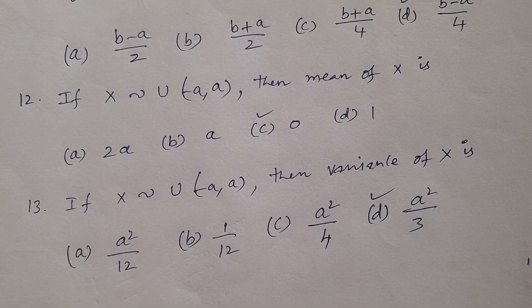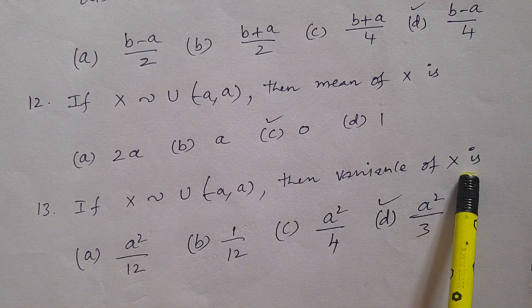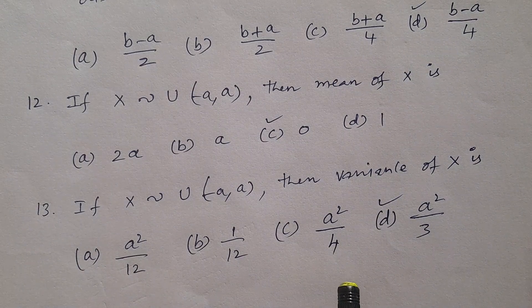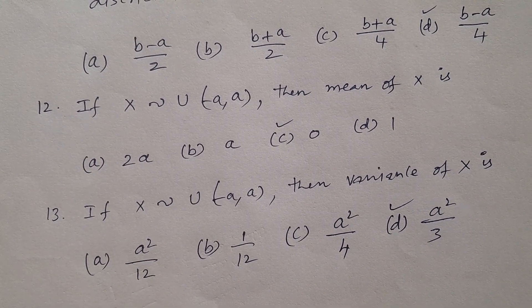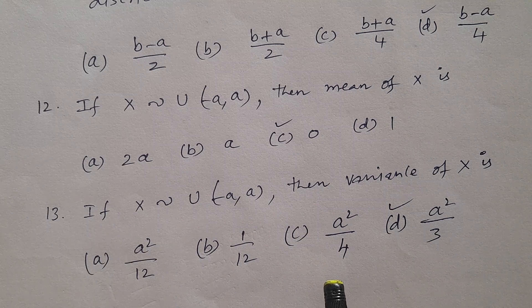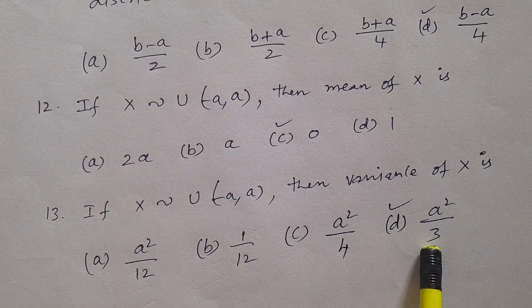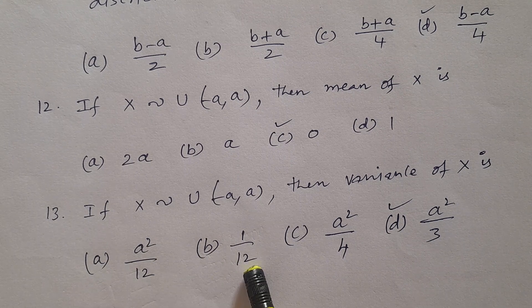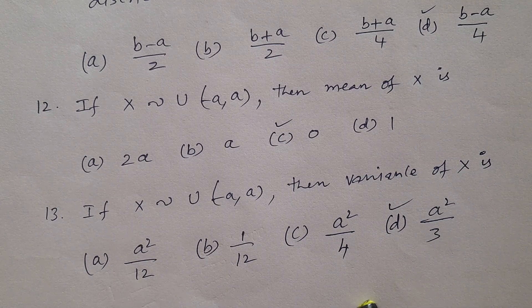Question number 13: If x follows uniform distribution with parameters -a to a, then the variance of x is — using the formula (b-a)²/12, where b = a and lower limit = -a: (a-(-a))² / 12 = (2a)²/12 = 4a²/12 = a²/3. Options: A. a²/12, B. 1/12, C. a²/4, D. a²/3. Answer is D: a²/3.